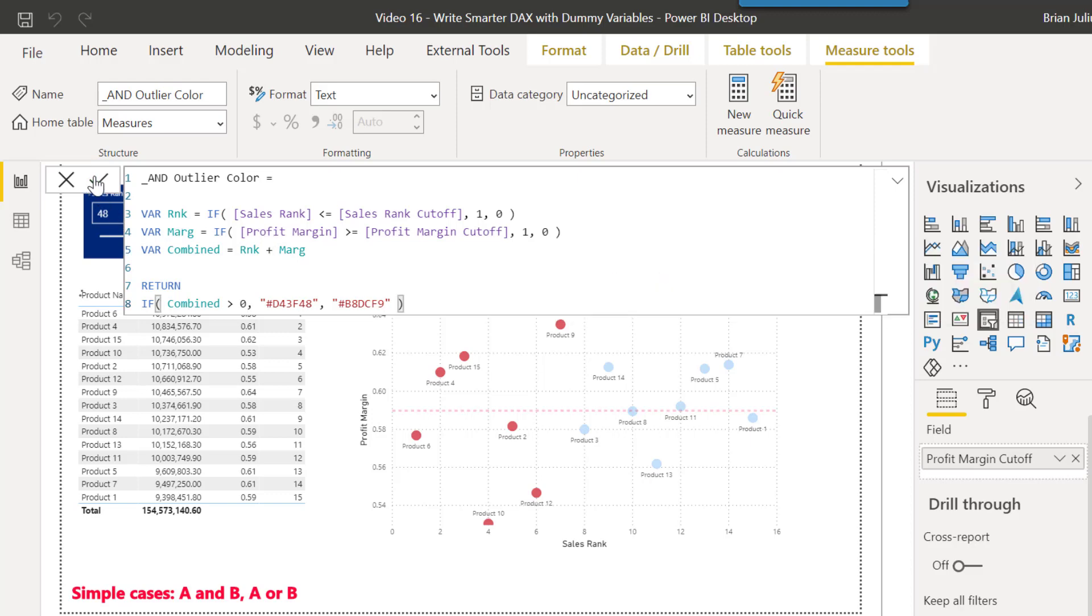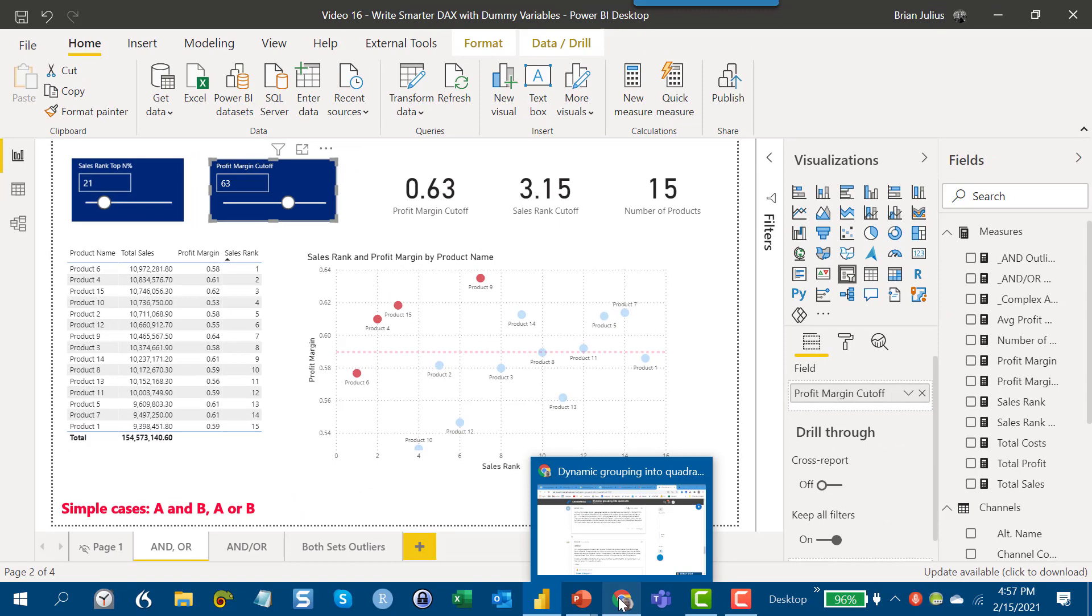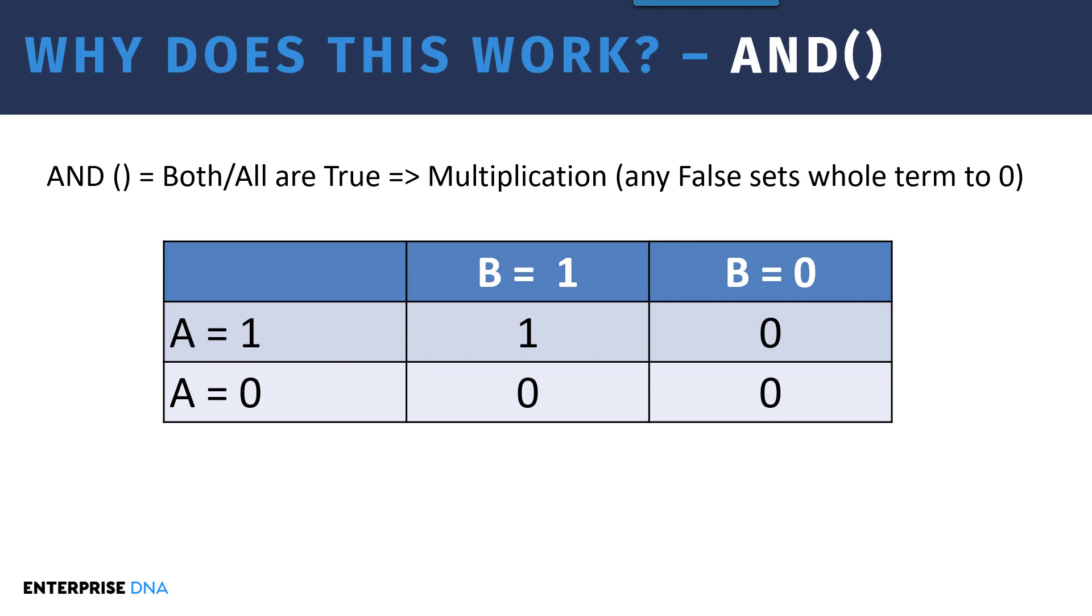And if we hit accept, what that'll do is that then changes so that when we look at our criteria, it's either the criteria of being sales rank below the cutoff, so these right here, or product margin above the cutoff, being this one here, rather than the AND condition which has produced these two points here. And the question is, why does this work?